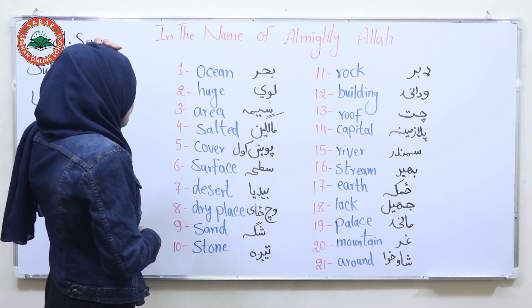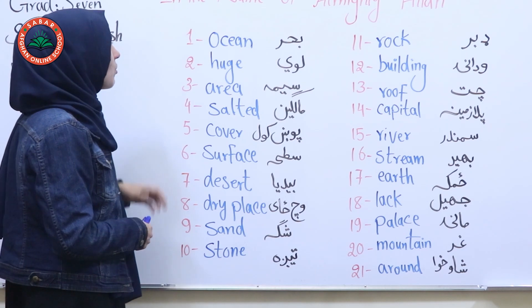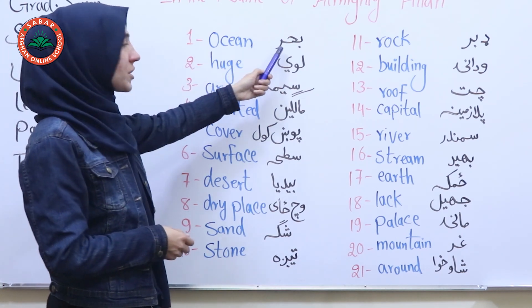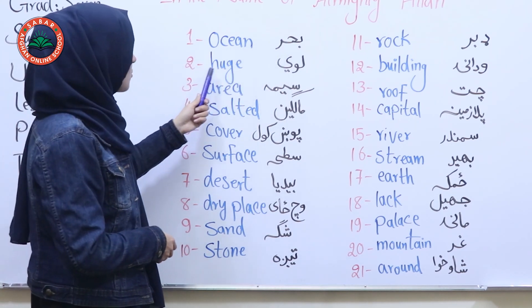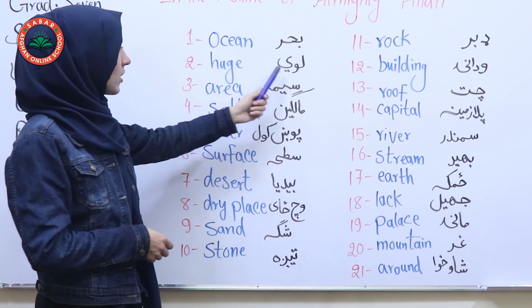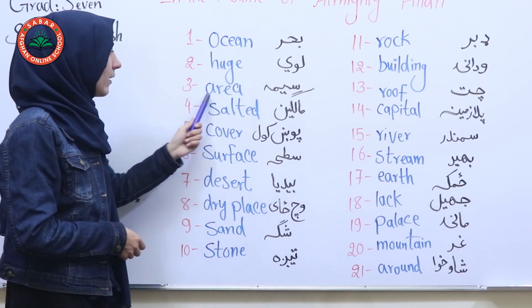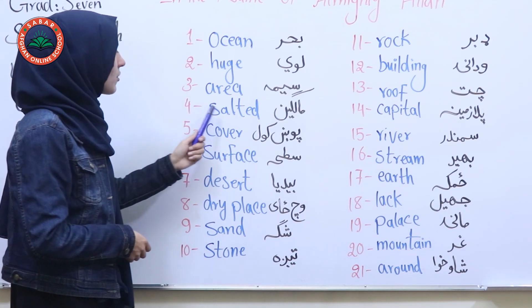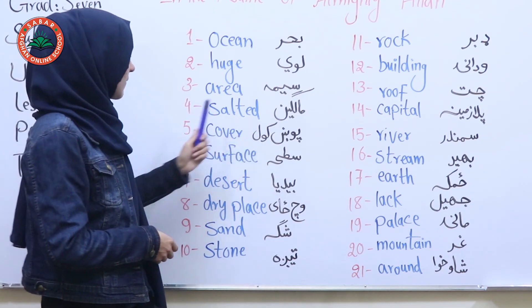Number 1: ocean — bahar. Number 2: huge — loy. Number 3: area — sema. Number 4: salted — malgin.